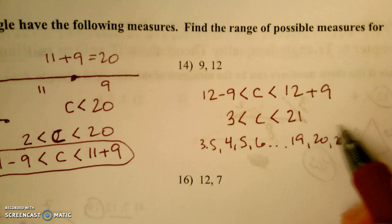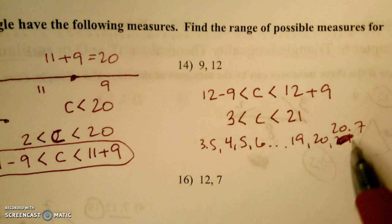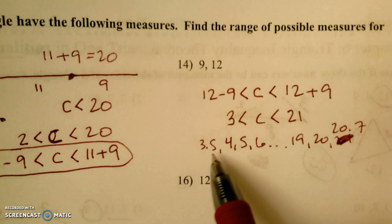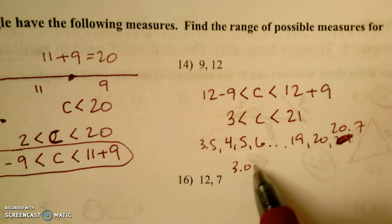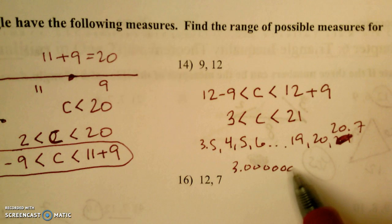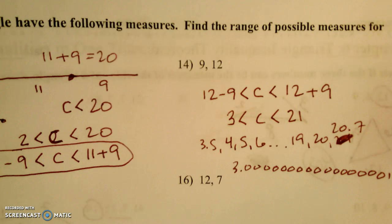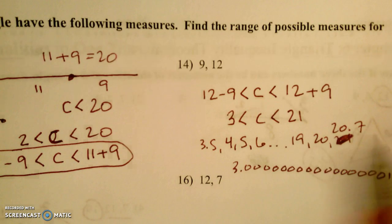3.5 or 20.7 or anything that's right up to 21 or right down to 3. It could be 3.0000001, but it can't be exactly 3. So it has to be anything bigger than 3 and less than 21.